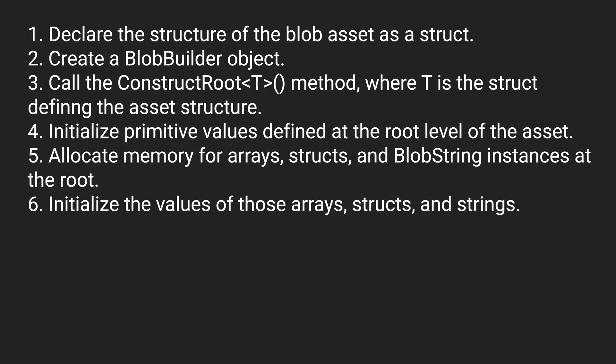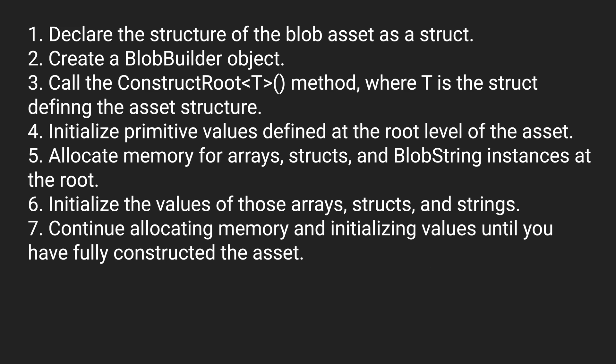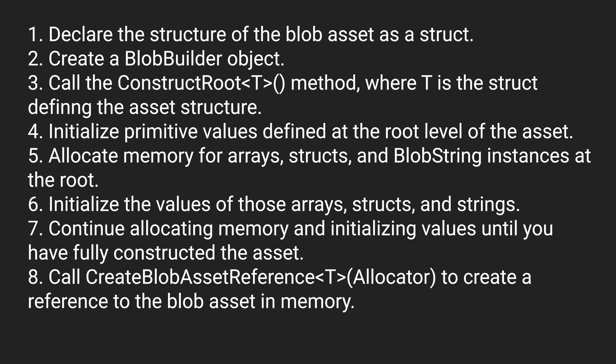If we did want to make modifications, we'd have to create a new blob asset store with the new data we want. Moving on, we'll initialize the values of the arrays, structs, and strings — whatever data we want — continuing to allocate memory and initialize values until the asset is fully constructed. Once ready, we call create blob asset reference, which creates a reference to the blob asset in memory. That reference is what we attach to components in our game to access the blob asset store values. Finally, we dispose the blob builder object.